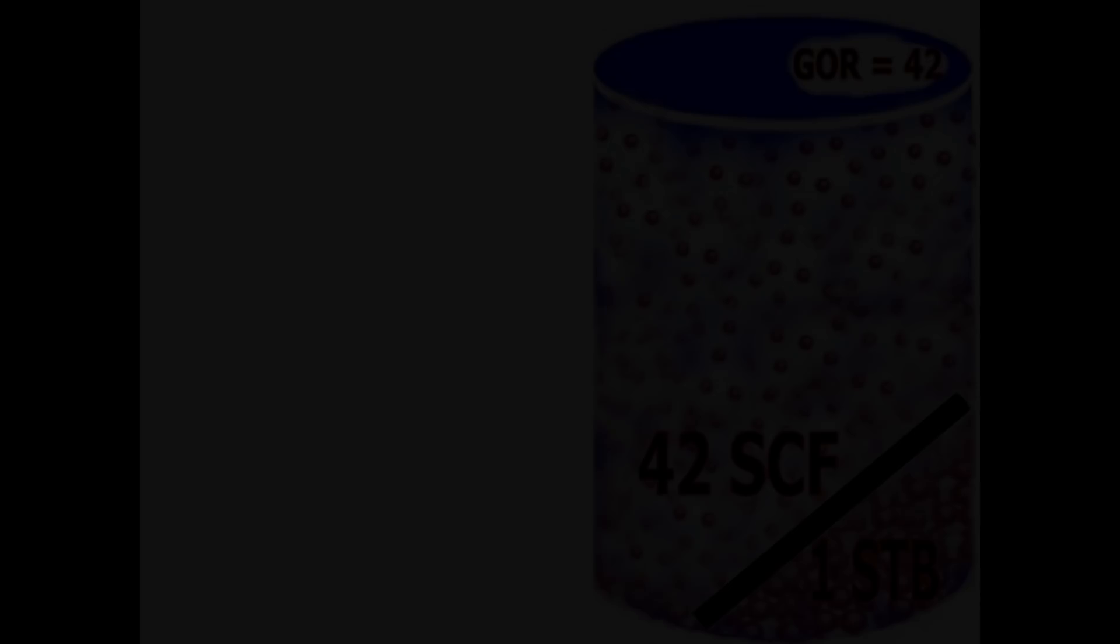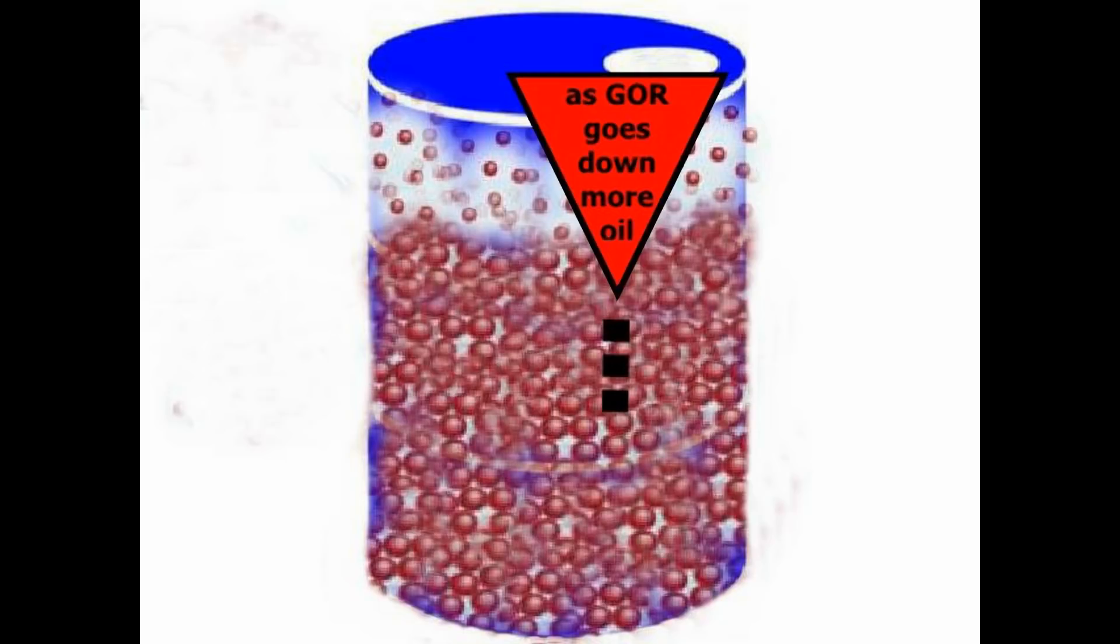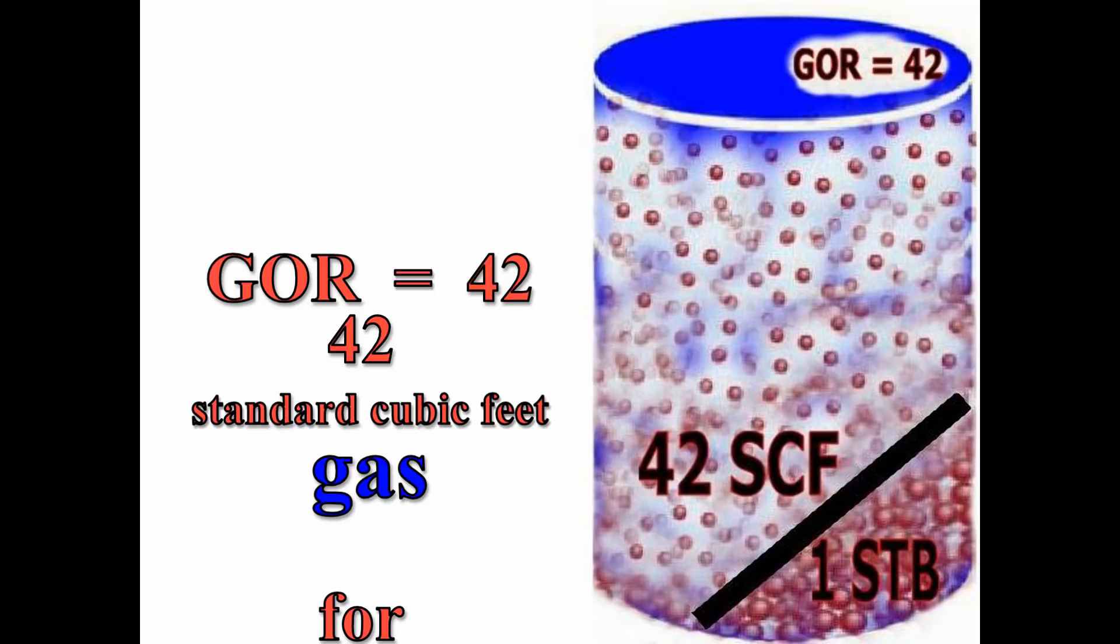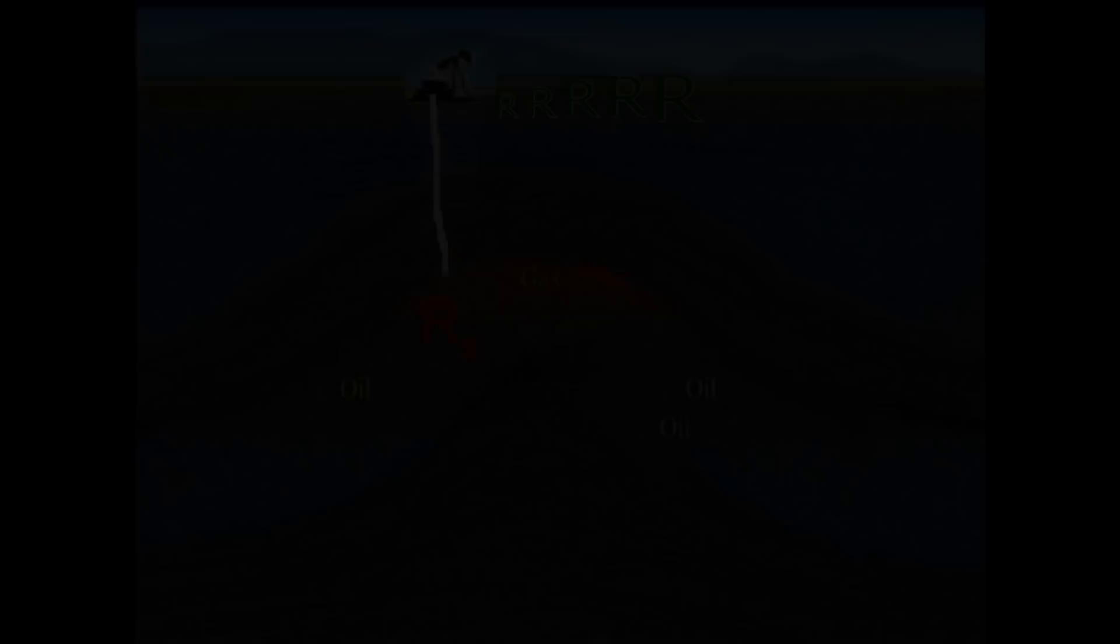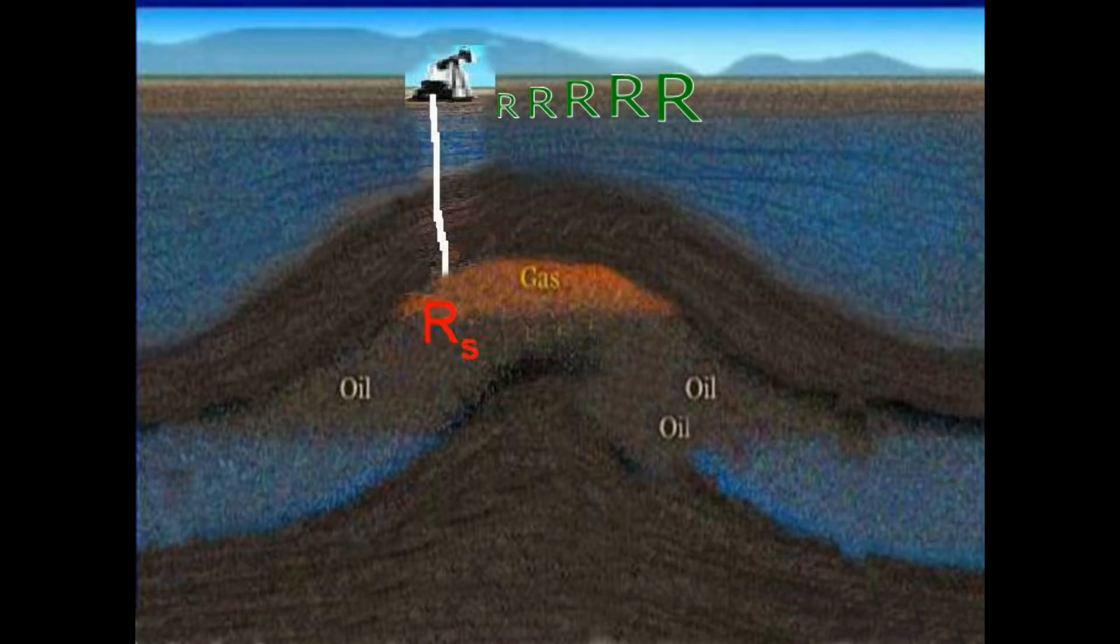For example, on the first day of production of an oil well, we measured the GOR. It is 42. This means there are 42 standard cubic feet of gas for every standard tank barrel of oil. During production, these ratios are monitored closely. The GOR is represented by the following symbols. R-S equals the initial reservoir GOR condition. R equals the producing GOR over time.